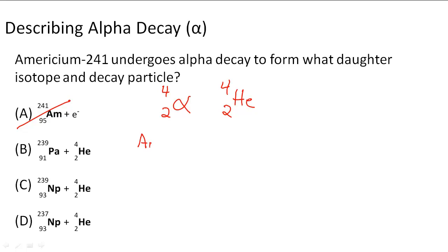So americium has a mass number that's given to us 241, but also an atomic number of 95.